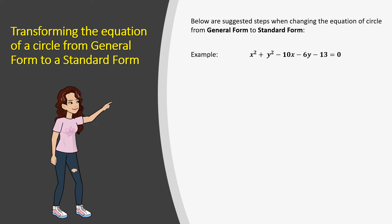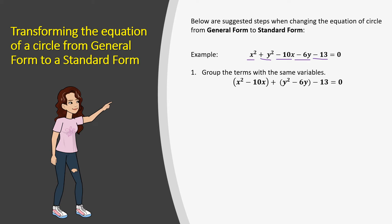Here's an example: x squared plus y squared minus 10x minus 6y minus 13 equals to zero. First, we group the terms by the same variable. Our first parentheses contain all x terms, and the second contains all y terms.